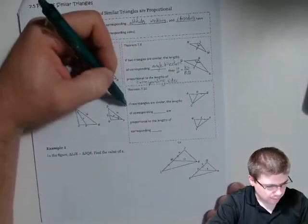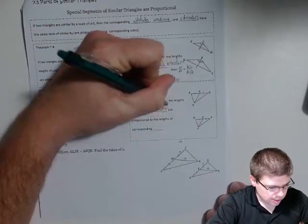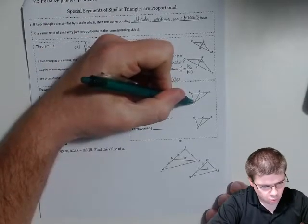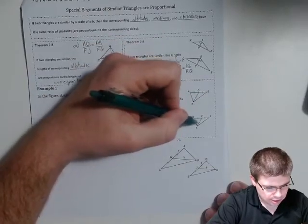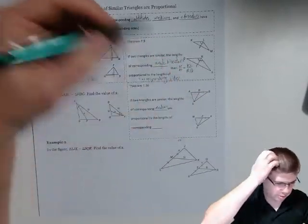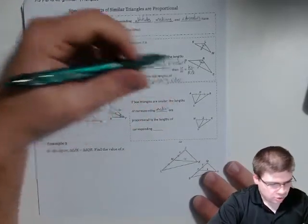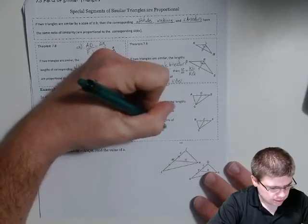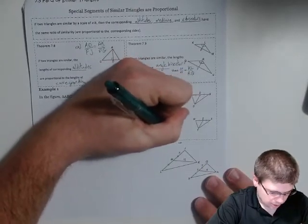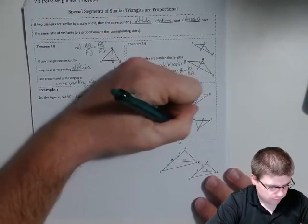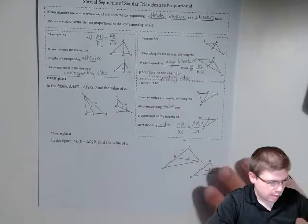And then the last one, if two triangles are similar than the lengths of corresponding medians. A median is a line that goes from one corner to the midpoint of the opposite side. So the medians are proportional to the lengths of the corresponding sides. For example, cd over yz would match ab over wx. So it would have those same proportions.